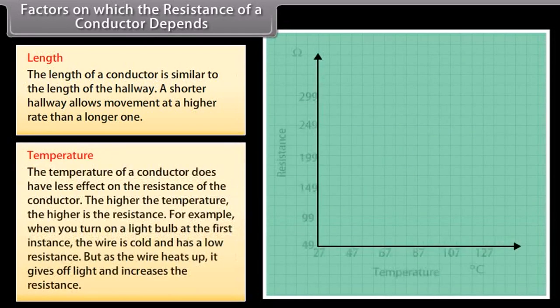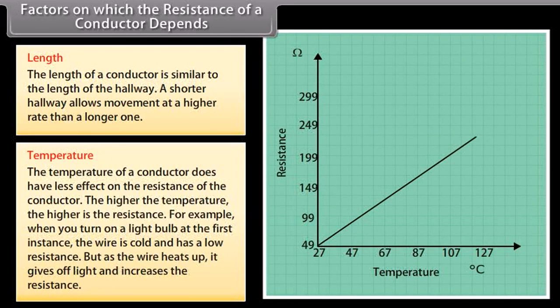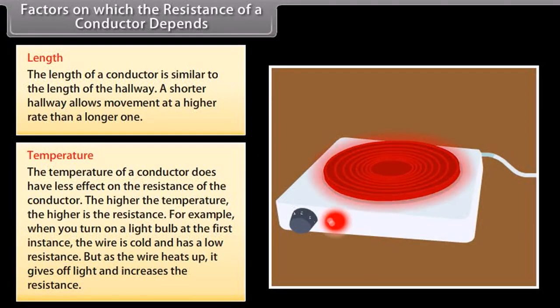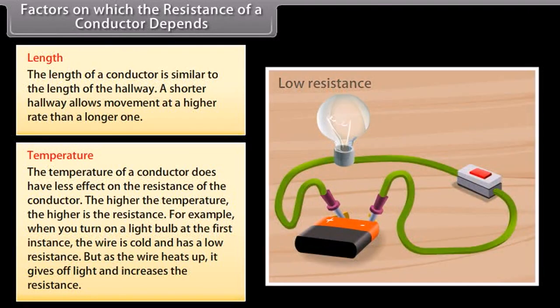Temperature also affects the resistance of a conductor. The higher the temperature, the higher the resistance. For example, when you first turn on a light bulb, the wire is cold and has a low resistance. But as the wire heats up, it gives off light and its resistance increases.